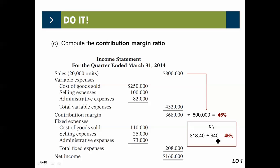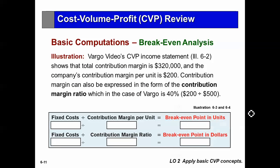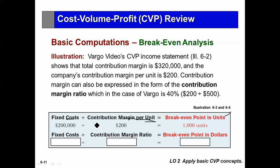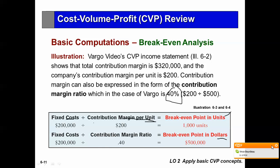On a unit basis, the selling price was $40, so contribution margin of $18.40 divided by selling price gives 46%. When using the contribution margin ratio, break-even is in dollars. We have a total contribution margin of $320,000. The company's contribution margin per unit is $200, and the contribution margin ratio is 40%. To get break-even in units, divide fixed cost by the contribution margin per unit — $200,000 divided by 200. For break-even in sales dollars, use the same fixed cost but divide by the 40% ratio.